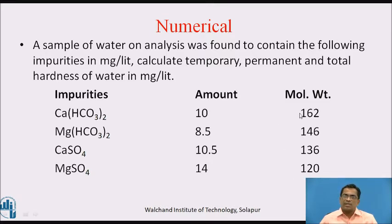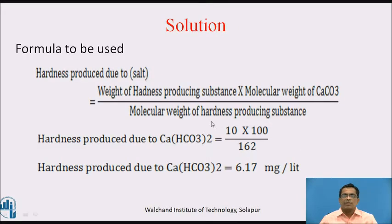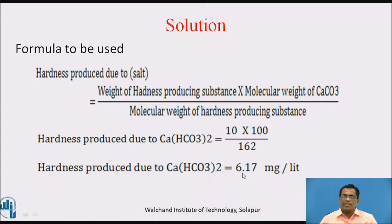Using the formula — hardness equals weight of hardness-producing substance multiplied by molecular weight of calcium carbonate (100), divided by the molecular weight of the hardness-producing substance — for calcium bicarbonate: 10 × 100 ÷ 162 = 6.17 mg/L. For magnesium bicarbonate: 8.5 × 100 ÷ 146 = 5.8 mg/L.